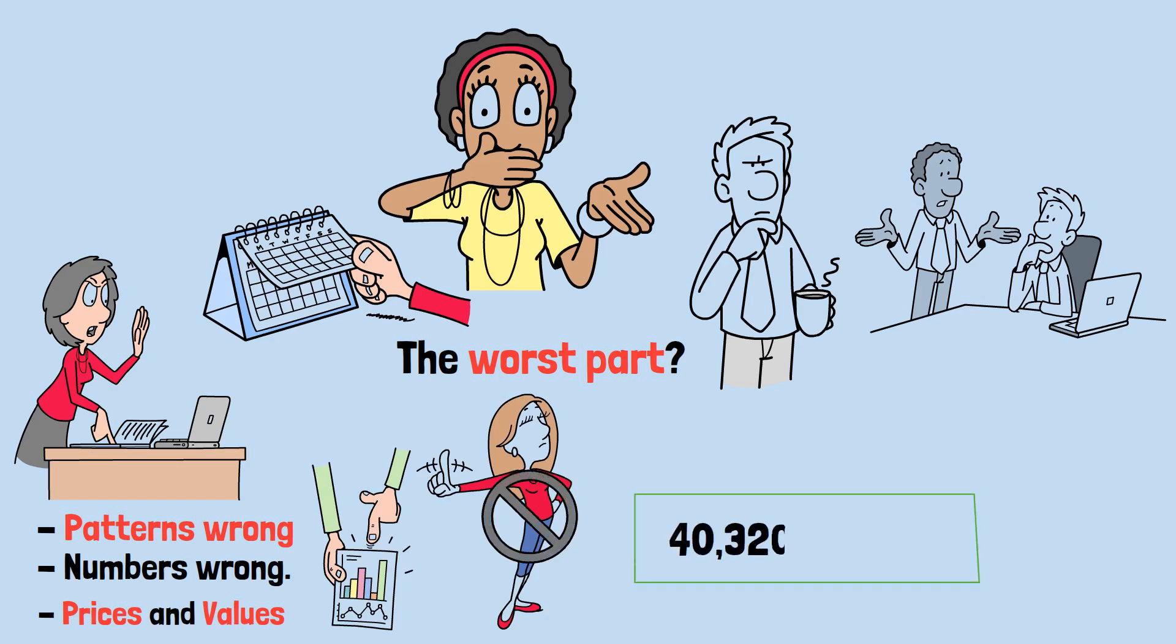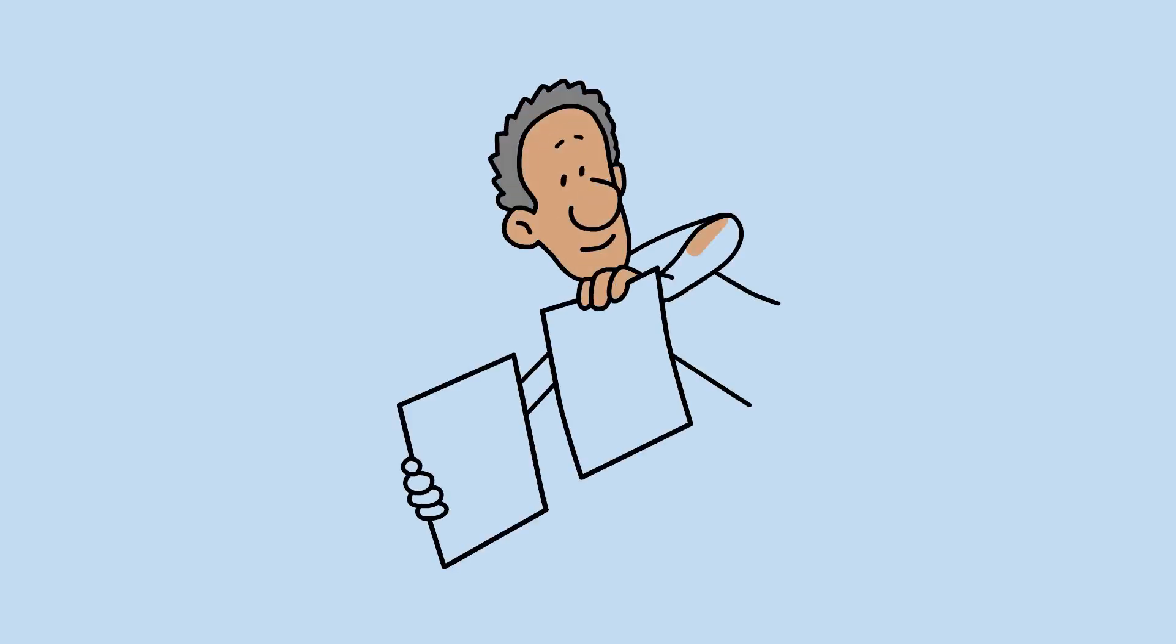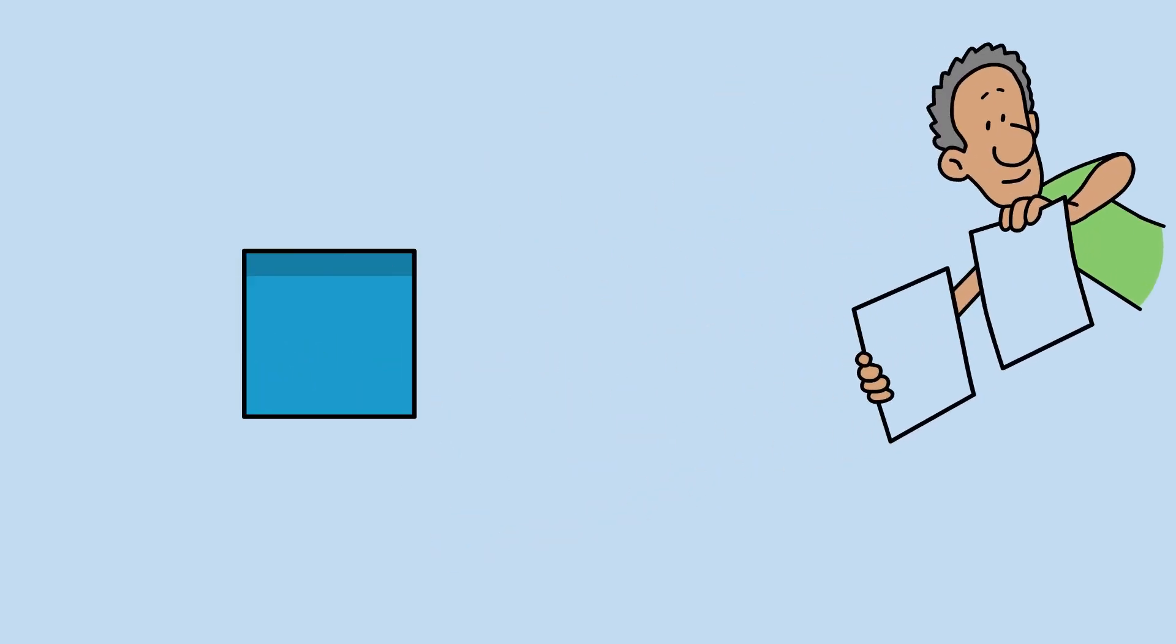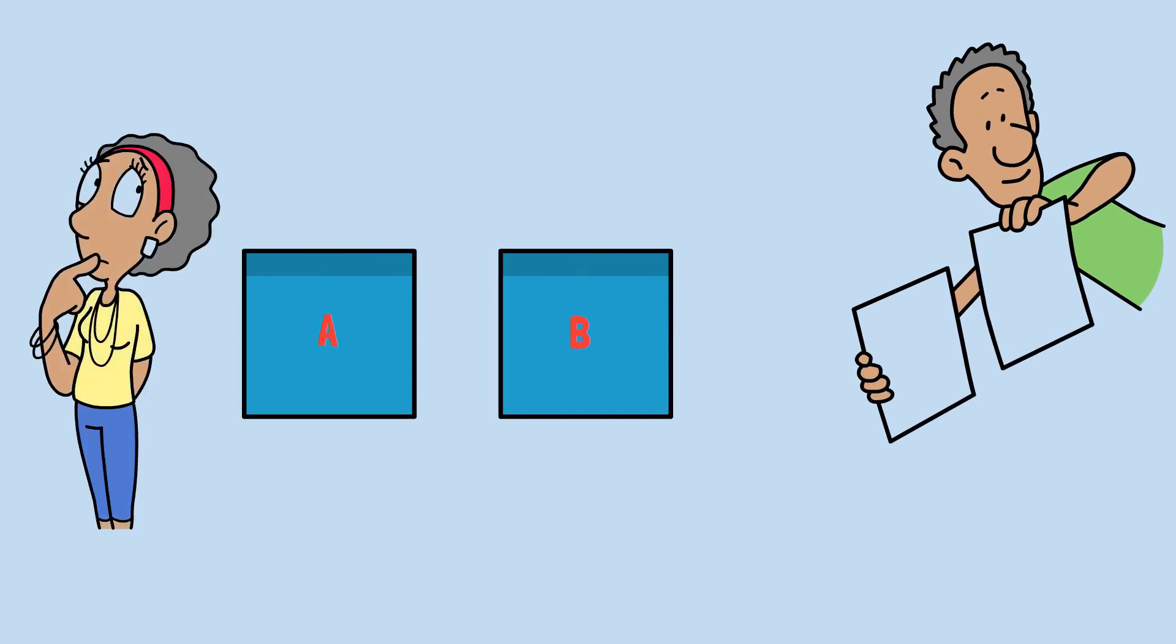It's why 40,320 is somehow greater than 40,320. Wait, what? I've got two very simple math problems here. They're sitting under these papers labeled A and B. Choose one. Right now. Do you want to solve A or B? Okay. You've chosen. Here's the deal.